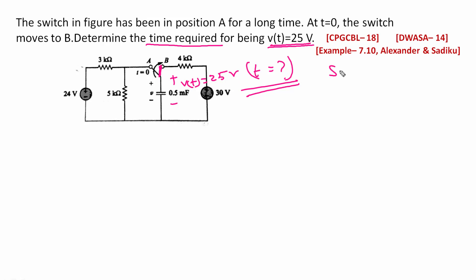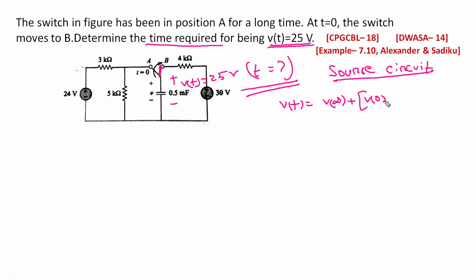We will use the source circuit equation. The source circuit equation uses the VT equation: VT is equal to V-infinity plus bracket V0 minus V-infinity, times e to the power minus T by tau. If we are source free, then the equation reduces to V0 times e to the power minus T by tau.